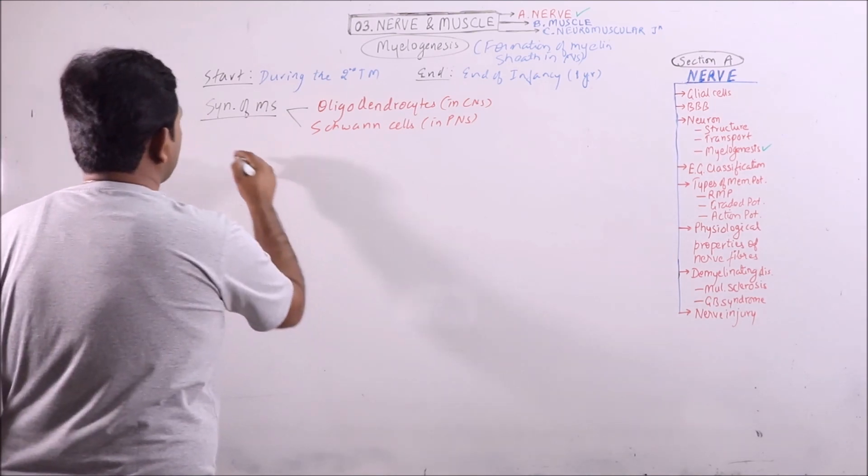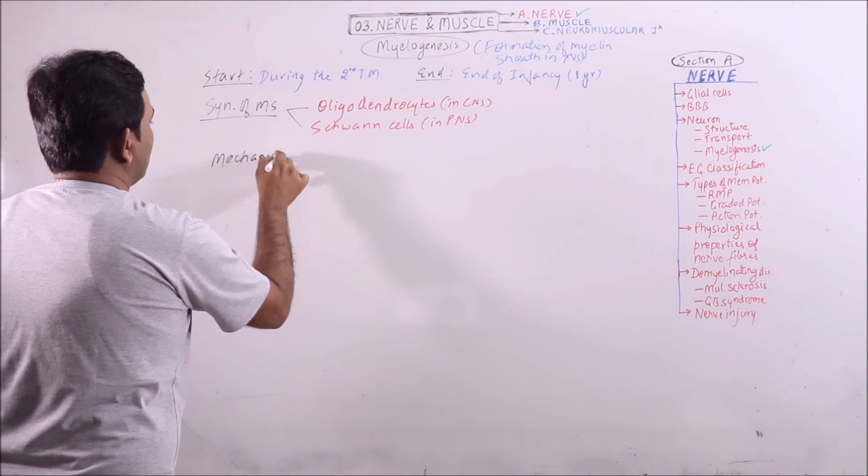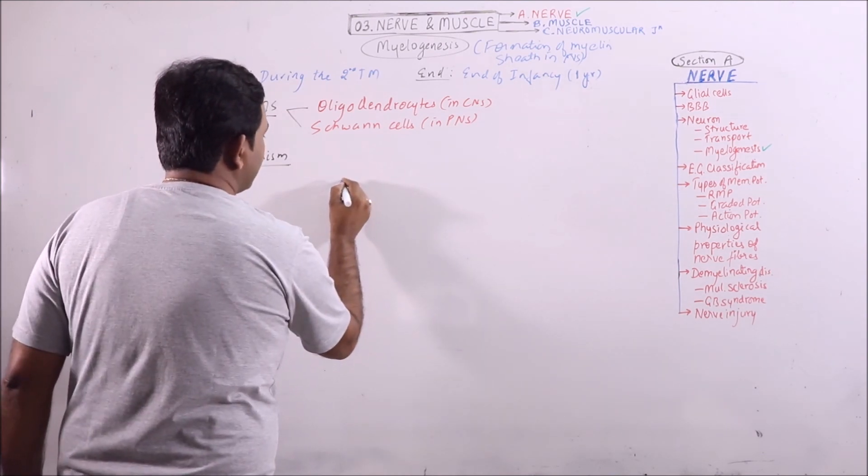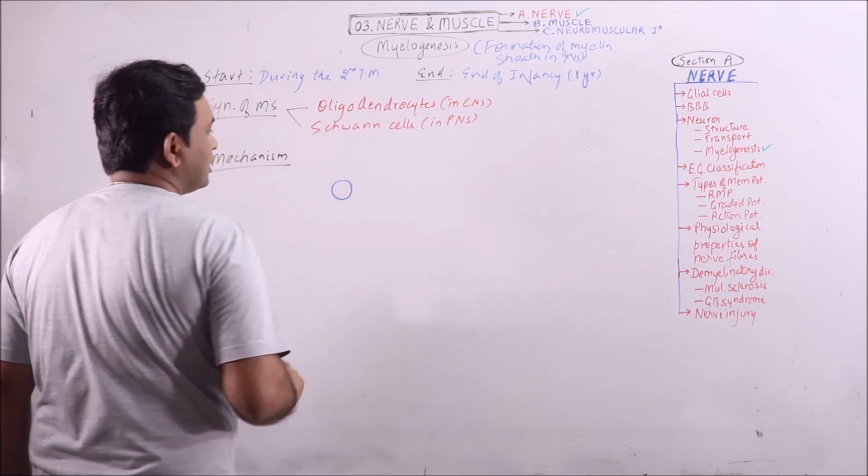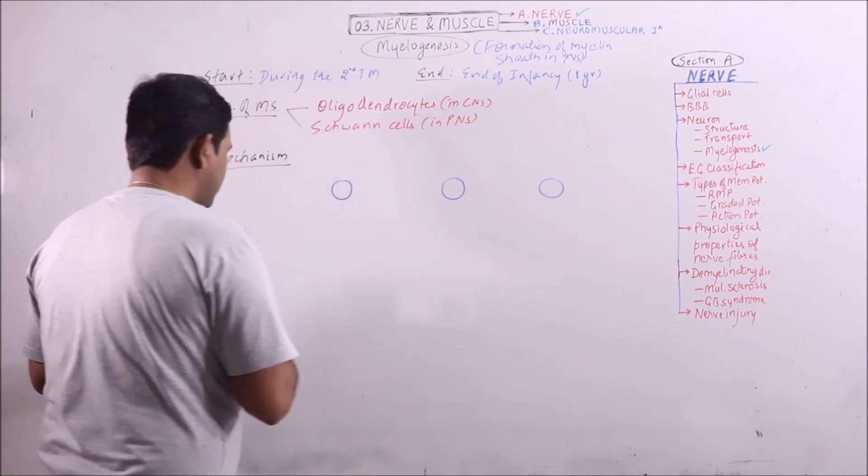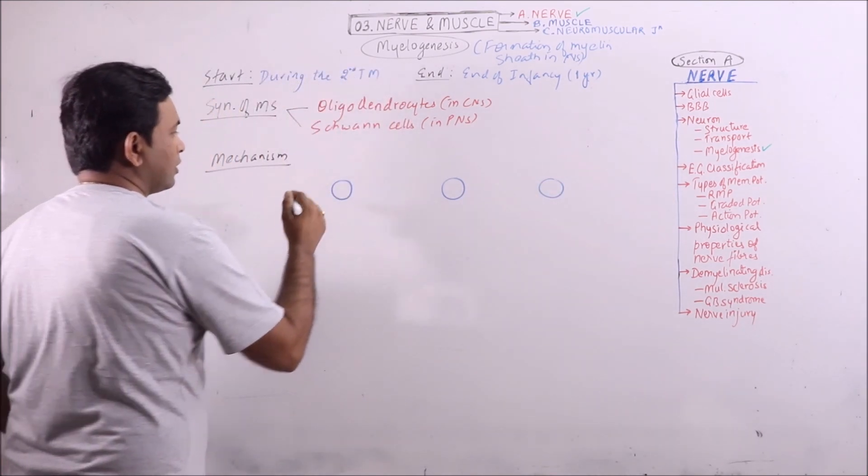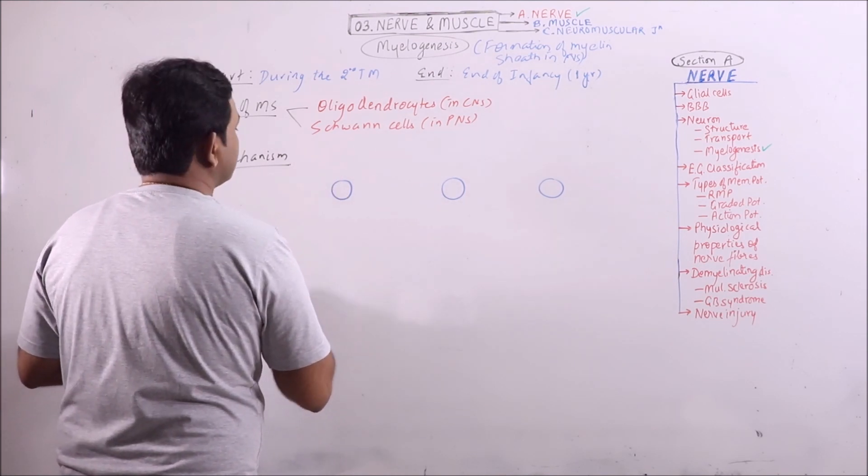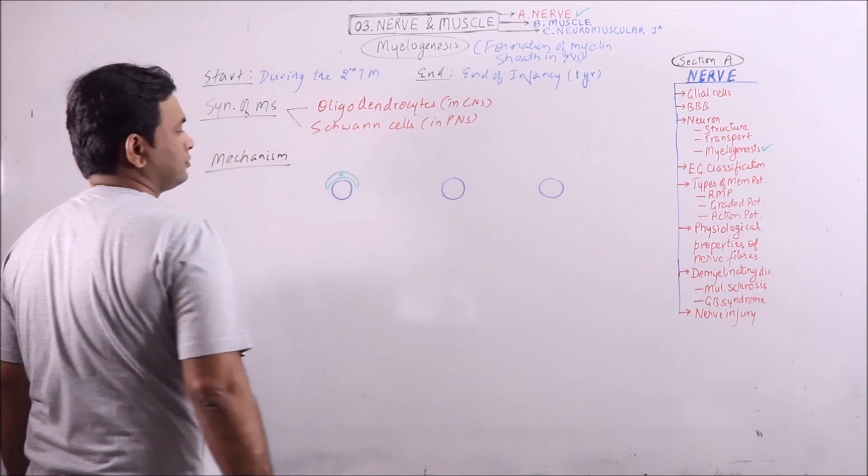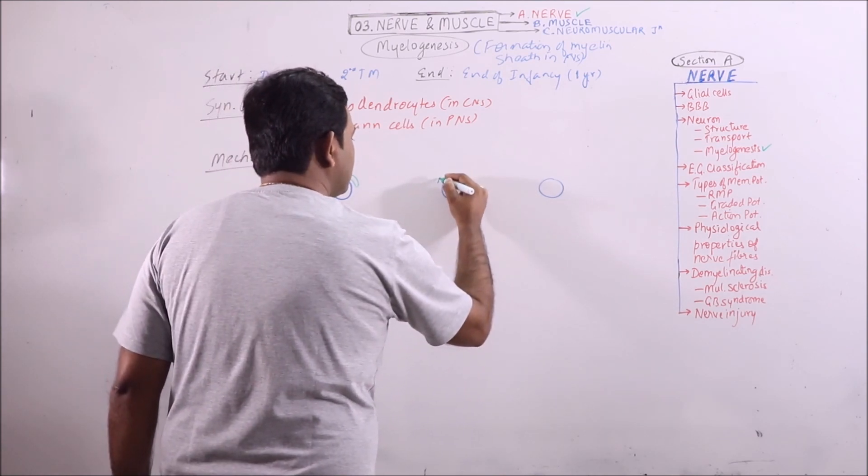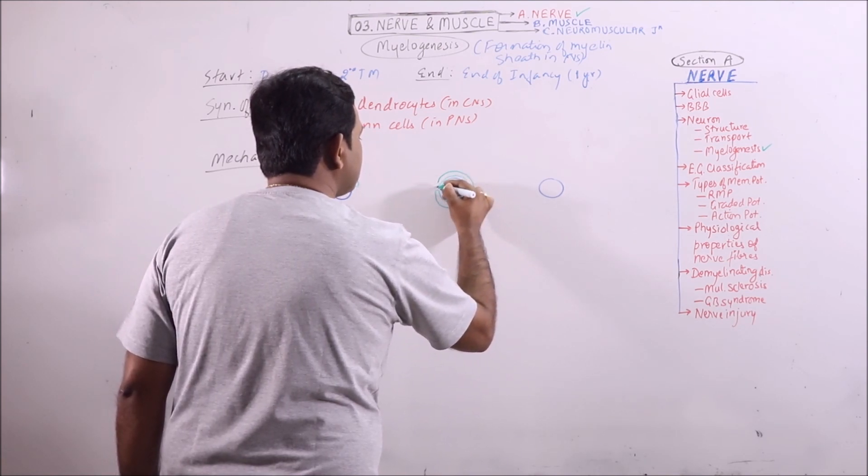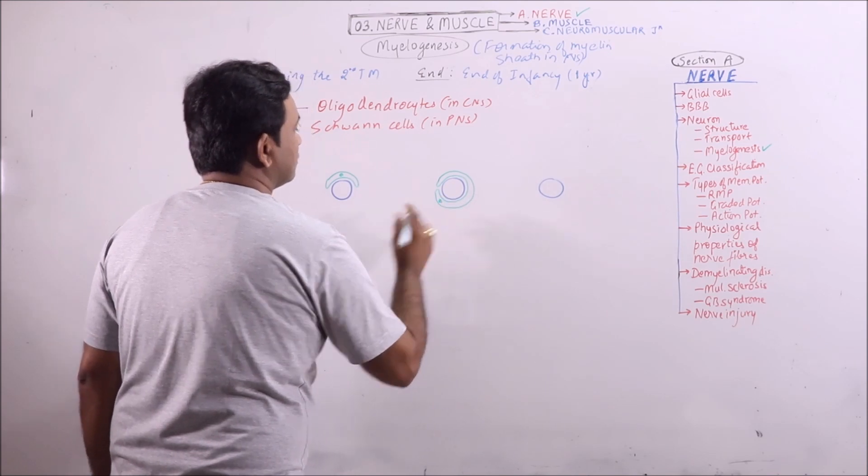Now what is the mechanism of formation of myelin sheath. Let us start with a Schwann cell and an axon in peripheral nervous system. Now this is the axon and this one is a Schwann cell.